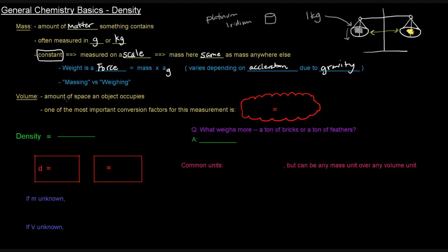Now that we've discussed mass, let's talk about volume. Volume is the amount of space an object occupies or takes up. Volume is something most people have learned by elementary or middle school, so this should be a review. One really important conversion factor for volume measurements is that one milliliter equals one cubic centimeter — that's super important when you have to convert from milliliters or liters to any cubic measurement, which we'll show an example of later.